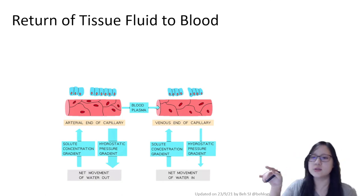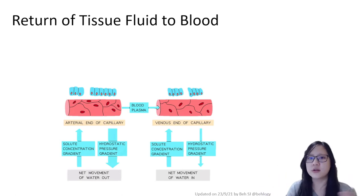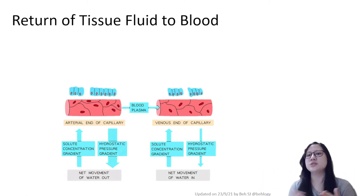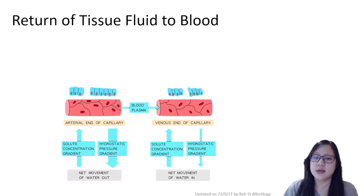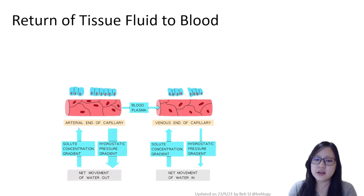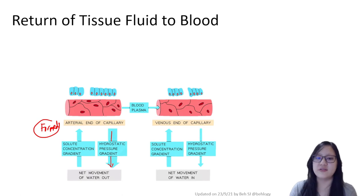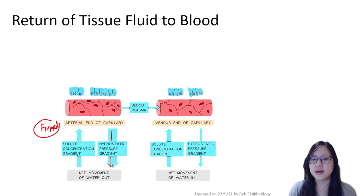How is tissue fluid then returned to the blood? If fluid goes out, it must come back — otherwise it will just continue accumulating and swelling, which we don't want. To understand the return of tissue fluid to blood, we must understand the different gradients at work. At the arterial end of the capillary, where tissue fluid is formed, there is a hydrostatic pressure gradient due to the differences in pressure at the arterial and venous ends. The high pressure at the arterial end pushes blood plasma out to become tissue fluid.